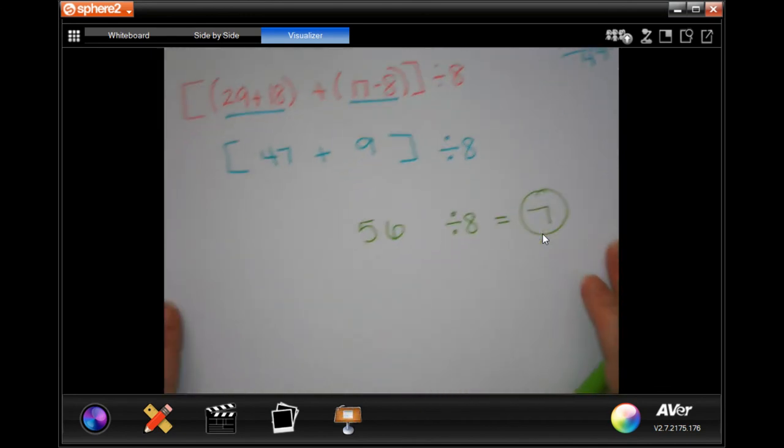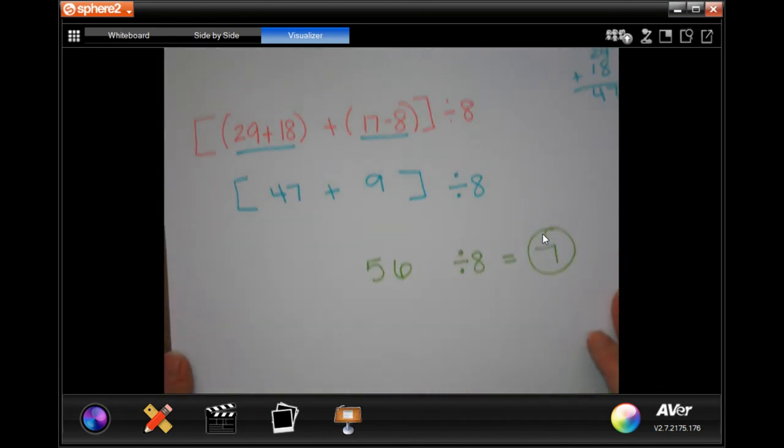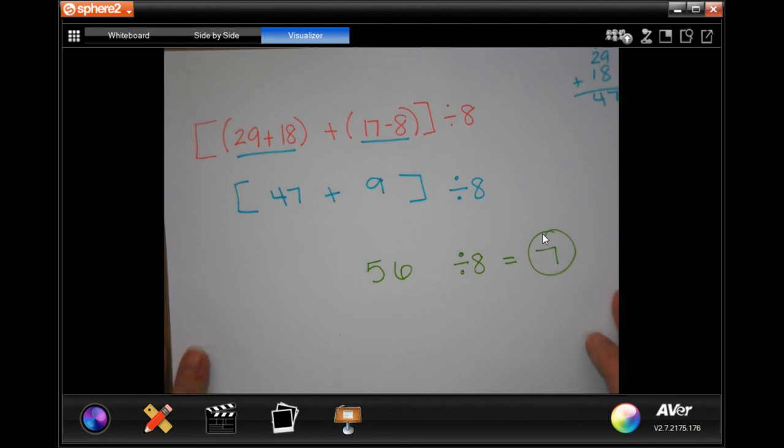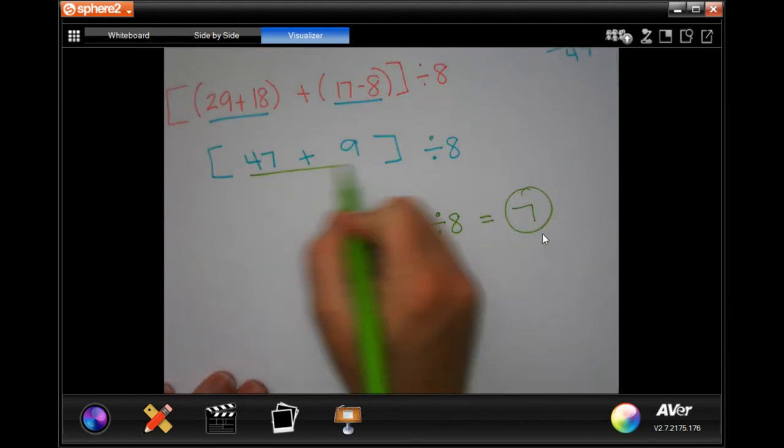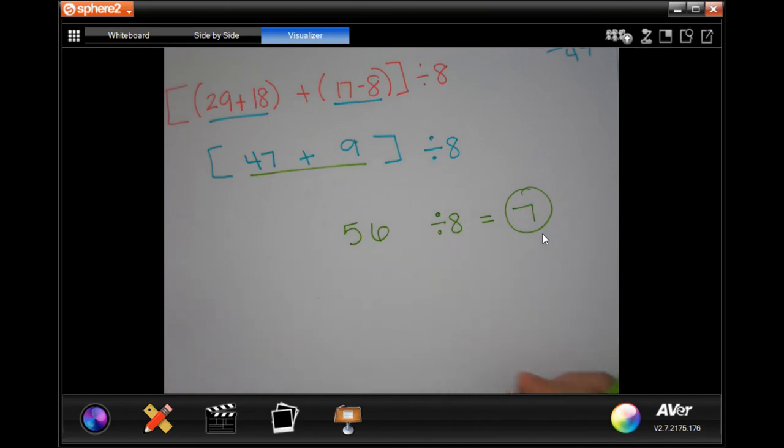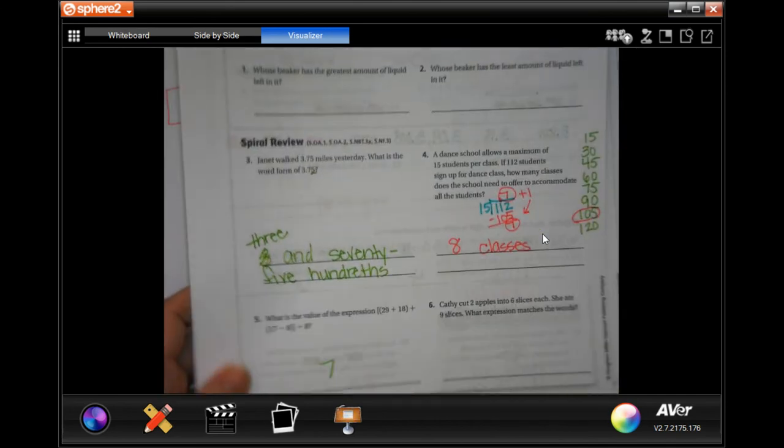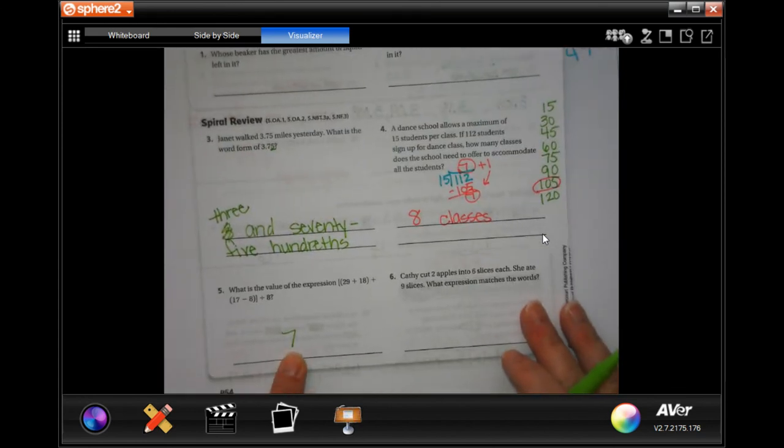I'm going to put a 7 there. So, pause it, write down, do whatever it is you've got to do to make that happen. So, we did that one, write it down. So, your number 5's answer is 7.